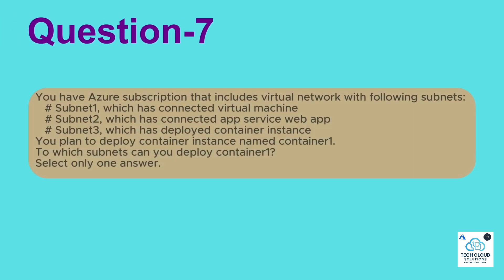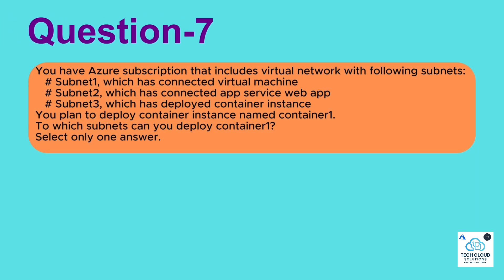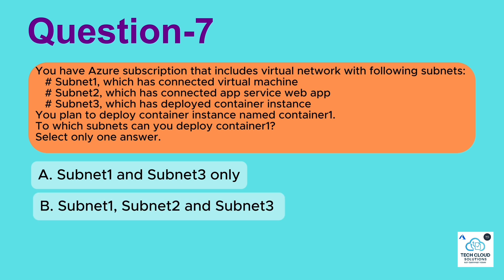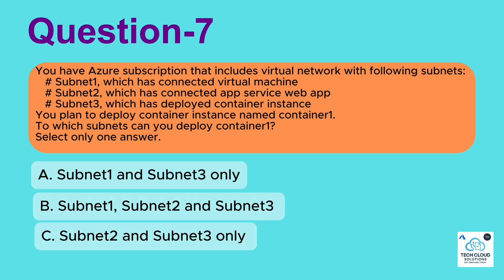Question 7: You have an Azure subscription that includes a virtual network with the following subnets. Subnet 1 — which has a connected Virtual Machine. Subnet 2 — which has a connected App Service Web App. Subnet 3 — which has a deployed container instance. You plan to deploy a container instance named Container 1. To which subnets can you deploy Container 1? Select only one answer. A. Subnet 1 and Subnet 3 only. B. Subnet 1, Subnet 2 and Subnet 3. C. Subnet 2 and Subnet 3 only. D. Subnet 3 only.